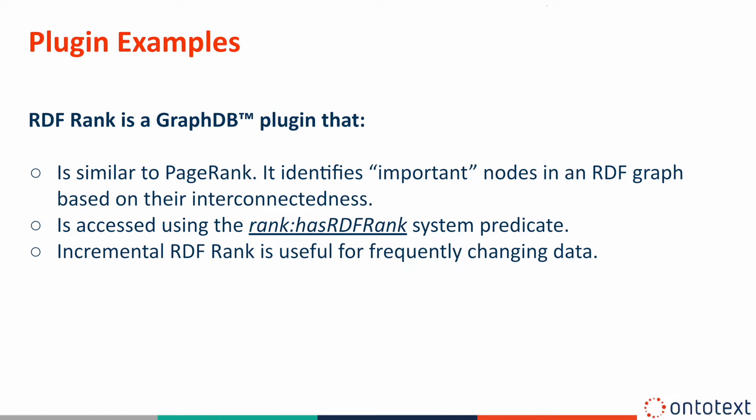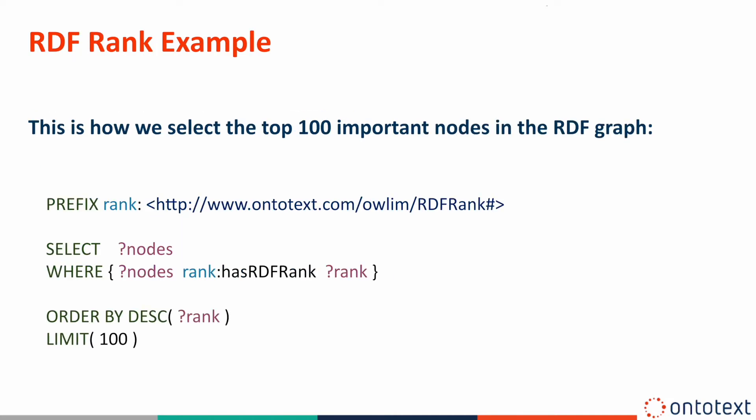The predicate is 'rank:hasRDFRank'. The value for the rank:hasRDFRank collection will be read from the plugin, but not the statement indexes. Each plugin can decide how to synchronize with updates and if it needs to integrate with the engine's transaction mechanism. This way, we can easily rank-order the nodes and limit to the 100 with the highest rank.